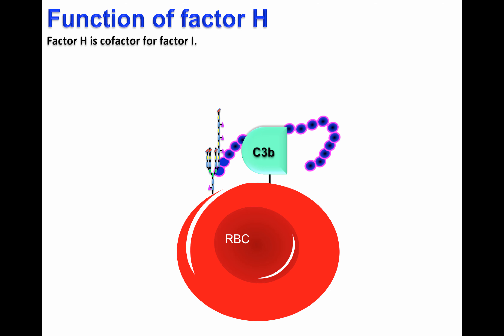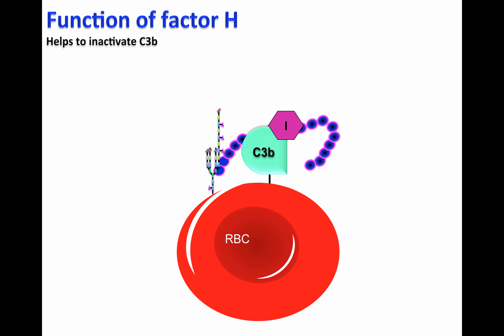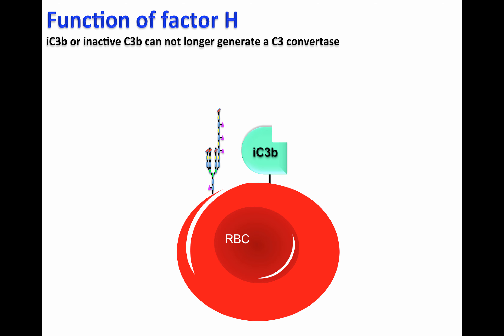Factor H will bind to the polyanion and C3B and will allow Factor I, a protease, to perform its function. This is what is called cofactor activity. Factor H, by binding to the surface, will allow Factor I to cleave C3B, generating iC3B. This iC3B, or inactive form of C3B, will not be able to form the C3 convertase, C3bBb.